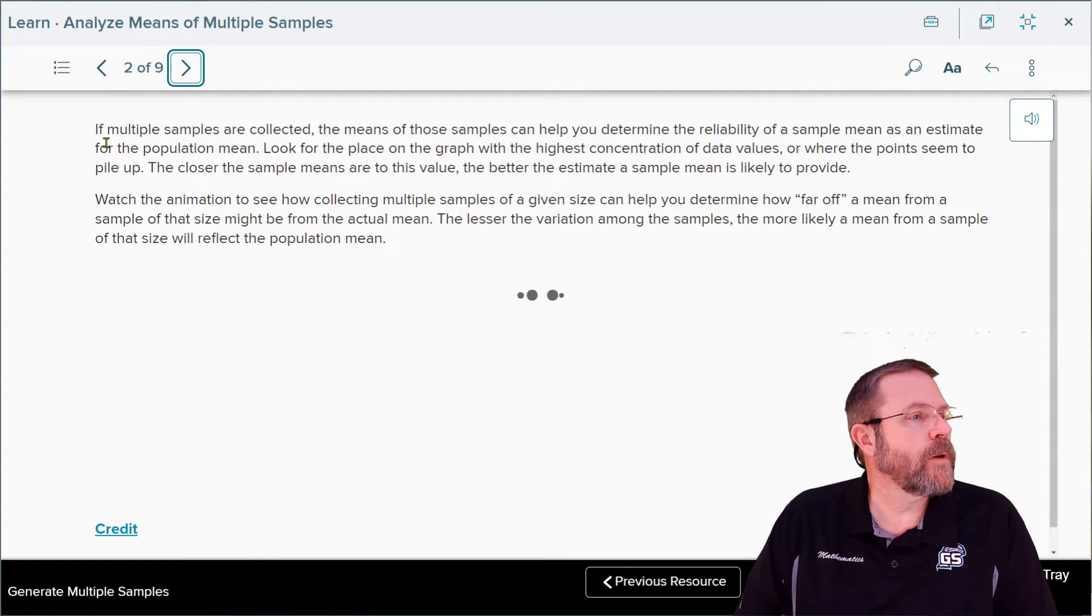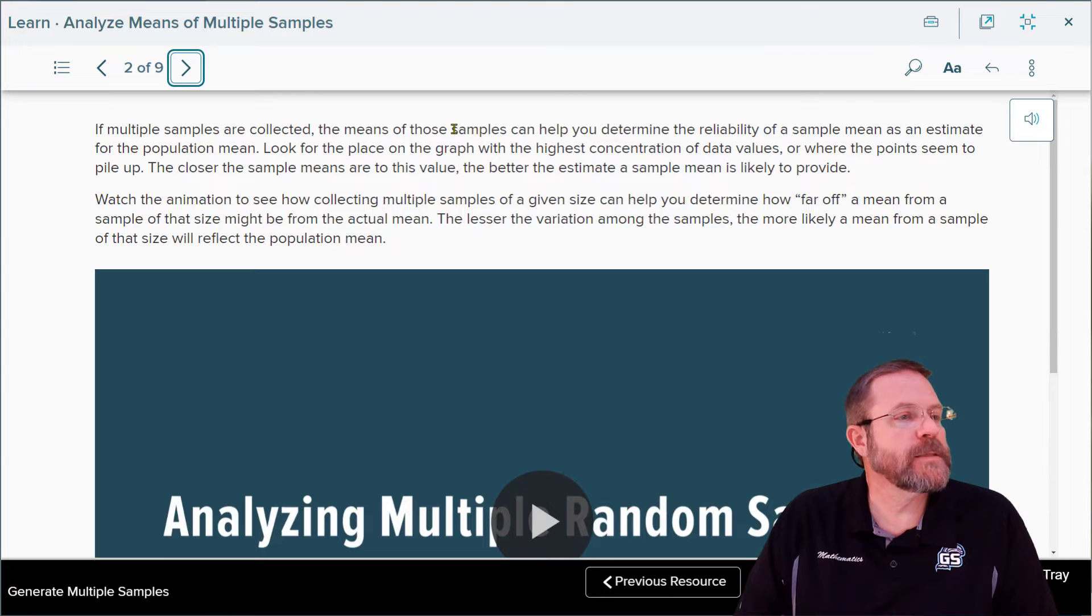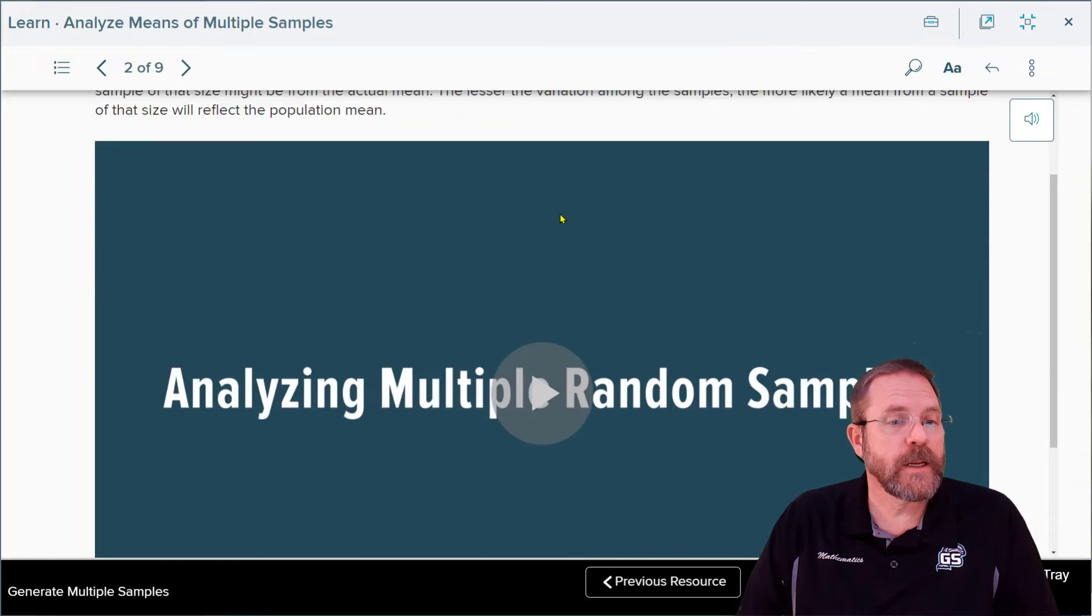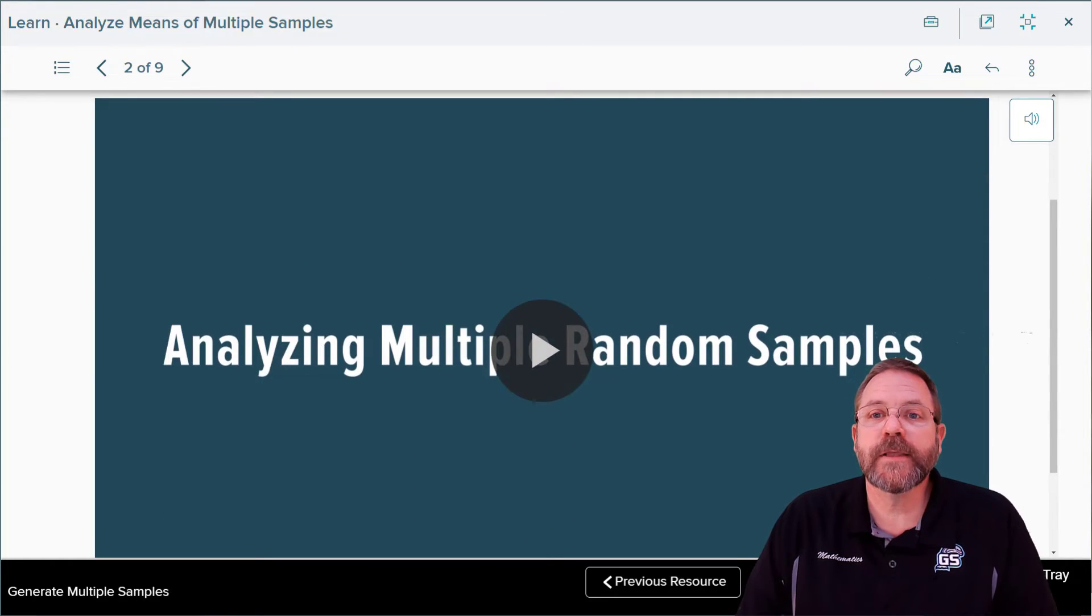Moving on from here, if multiple samples are collected, the means of the samples can help you determine the reliability of the sample mean as an estimate of the population mean. Look for the place on the graph with the highest concentration of data values or where the points seem to pile up. The closer the sample means are to this value, the better the estimate to the sample mean they are likely to provide. Let's watch an animation and see what they have to say about doing just that.